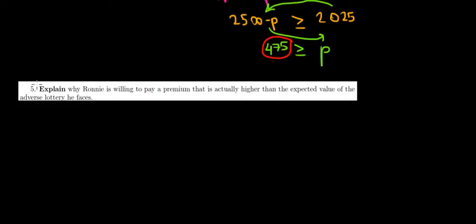Let's have a look at question 5 now. We have to explain why we're willing to pay a premium that is actually higher than the expected value of the adverse lottery.